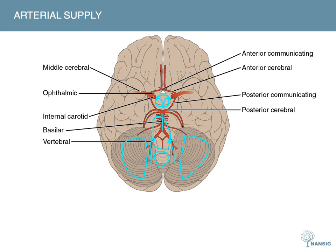The main arteries to know in this area are: the anterior cerebral arteries, joined by an anterior communicating artery in the middle; the middle cerebral arteries, which are large and a common site of ischemic strokes — a clot from the heart or carotids can travel through the internal carotids and lodge in these vessels; and the posterior cerebral arteries at the back. Together, all of these comprise the Circle of Willis.